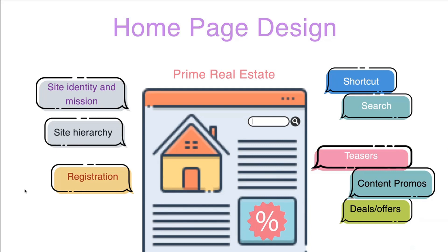So the home page is where everyone wants to be. What should it have and what should it not have? There is a hierarchy. The home page should show site identity and mission, registration or main call to action — for us it could be registering on the website or calling. Shortcuts and navigation should be visible. There will also be some teasers — each department wants to show featured sneak peeks.